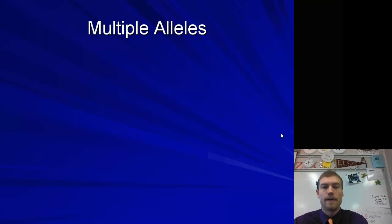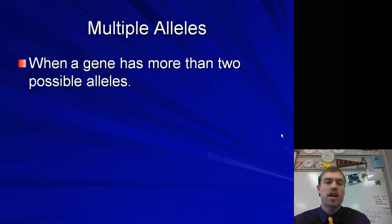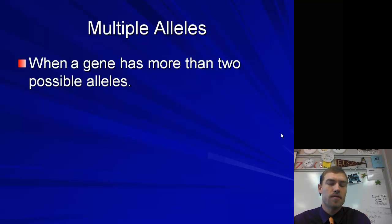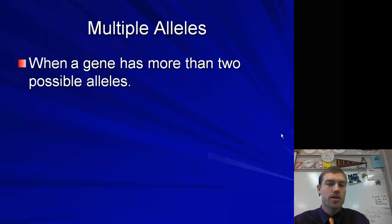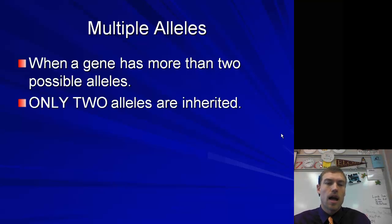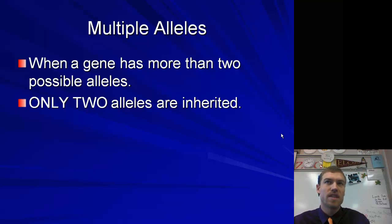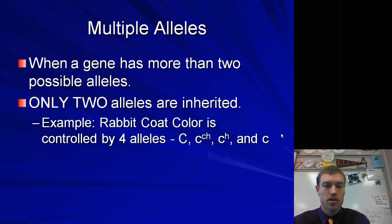Another type of inheritance pattern is multiple alleles. This is where a gene has more than two possible alleles. In the normal dominant recessive pattern, you just have two options — either dominant or recessive. In this case, we're actually going to have multiple of those. However, you can still only have two alleles because you still only have two chromosomes of each type, so you're not going to be getting three or four of them.